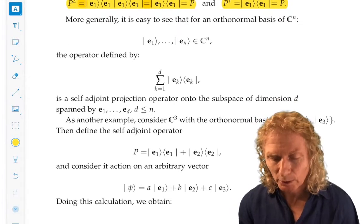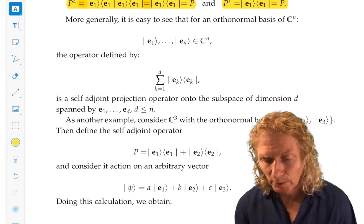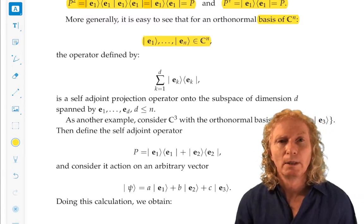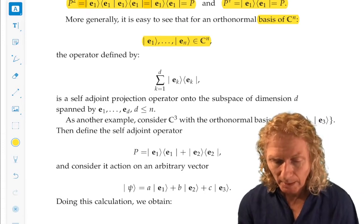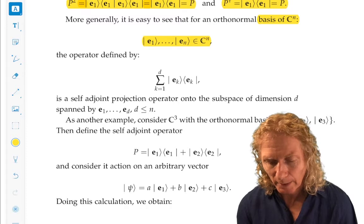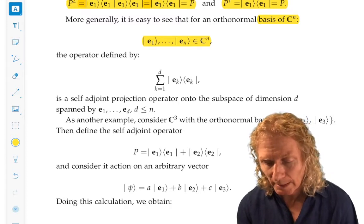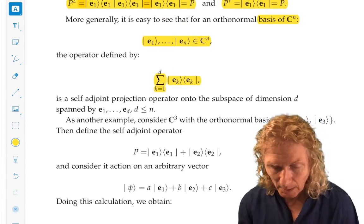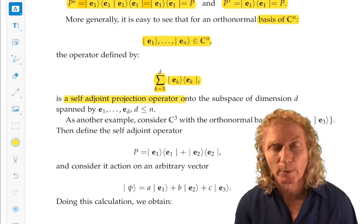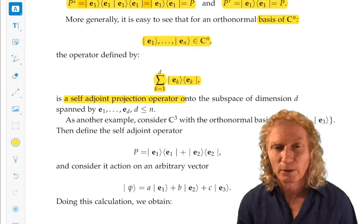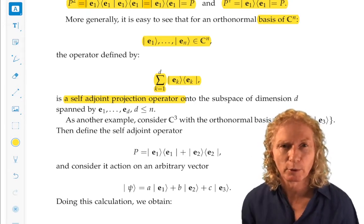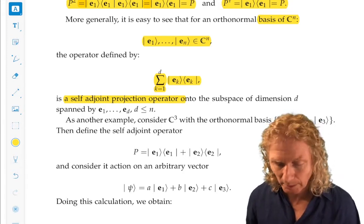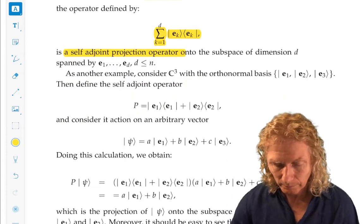Now, this type of construction can be generalized to N dimensions. So N dimensions for us is going to be Cn. An orthonormal basis will be ket E1 through ket En. And let's take an operator defined as the bracket pairs of the first D bracket pair, the sum of the first D bracket pairs. And that is a self-adjoint projection operator. Verify that. Self-adjoint should be easy, but just show that it's a projection operator. And that will give you a little bit of practice manipulating the bracket combinations.